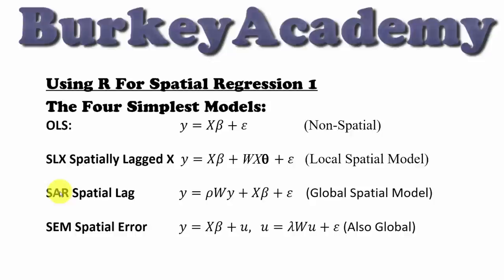The second model is the spatial lag model, sometimes called a SAR model, although Roger Bivand complains about that. He says SAR should stand for simultaneous autoregressive only, not spatial autoregressive as used in econometrics. In this model, we do not have the spatially lagged x's — we have spatially lagged y's: rho W y.